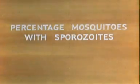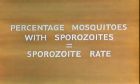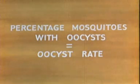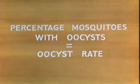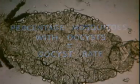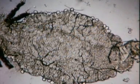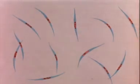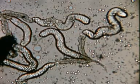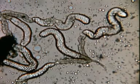The percentage of mosquitoes found to have sporozoites is termed the sporozoite rate for the species. The oocysts may be similarly defined. However, oocysts on the stomach wall only show the susceptibility of the mosquito to infection; they do not confirm it as a vector. The sporozoite rate, on the other hand, is the most important measurement of field malariology.